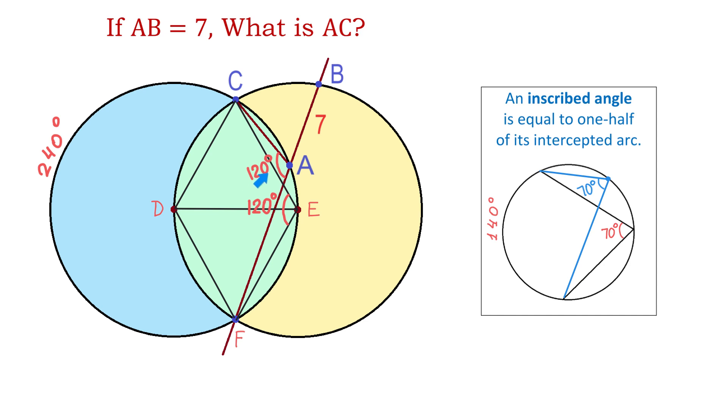And now, if this angle is 120, then the angle CAB has to be 60 degrees, because these two angles are supplementary angles.